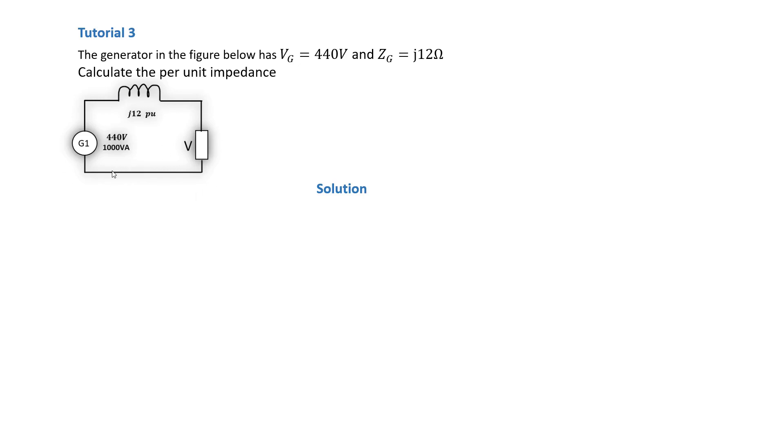The following diagram is a representation of a generator with an internal impedance of j12 ohms, which is purely inductive. The total apparent power that the generator is able to supply is 1000 volt-amperes, or 1 kVA, and the generator is able to supply a voltage of 440 volts.